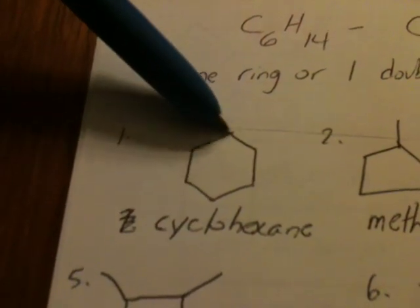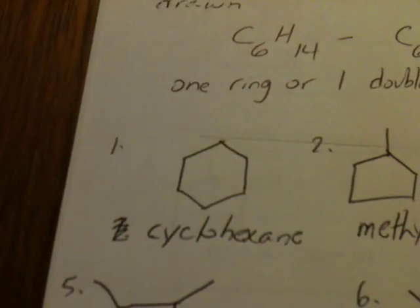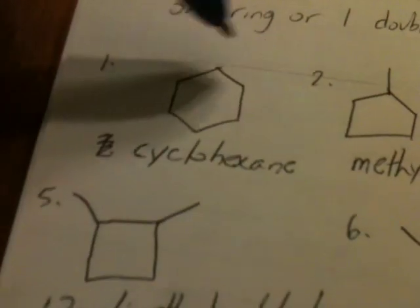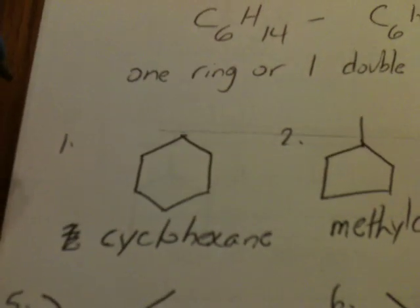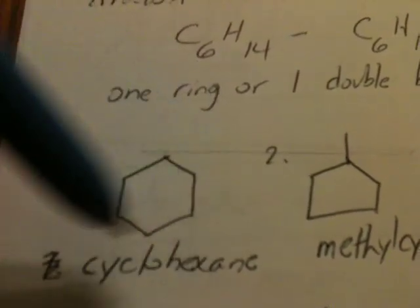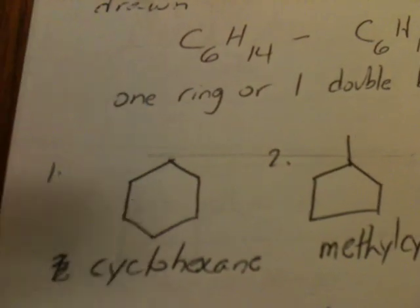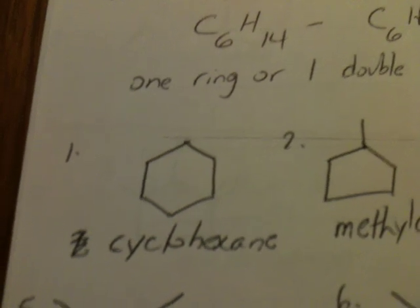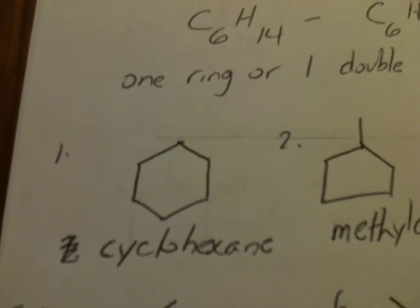So for example, if we draw cyclohexane in bond line notation, each one of the elbows has 2 hydrogens on it. So this is C6H12, although we're only showing the carbon atoms. We're only representing the carbon atoms, but the hydrogen atoms are assumed to be there.